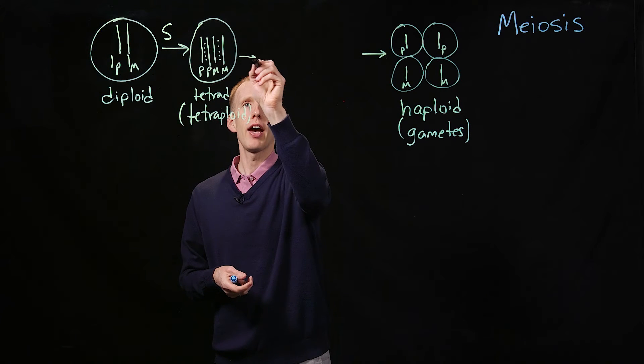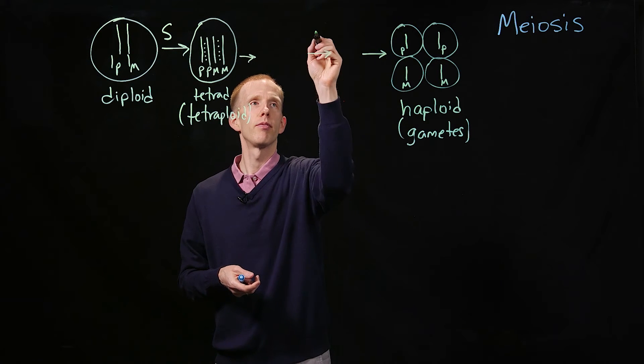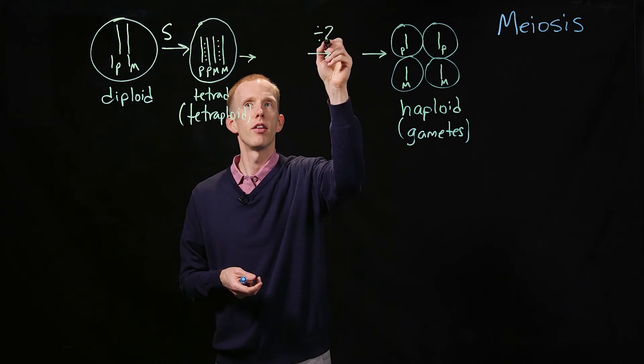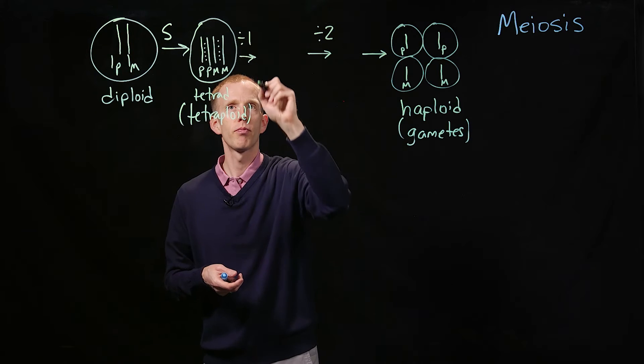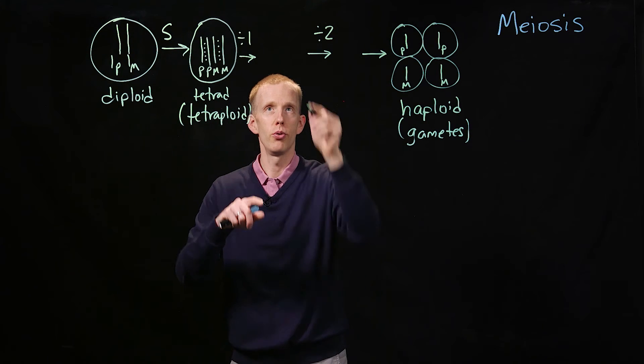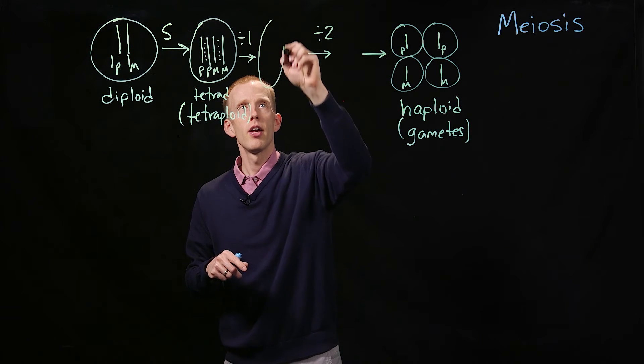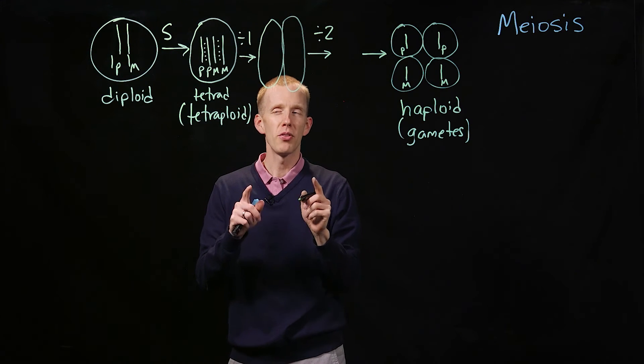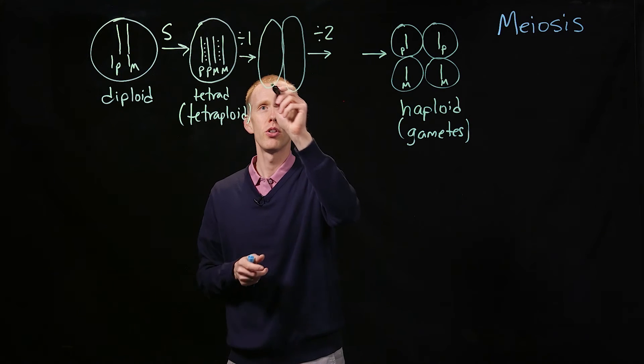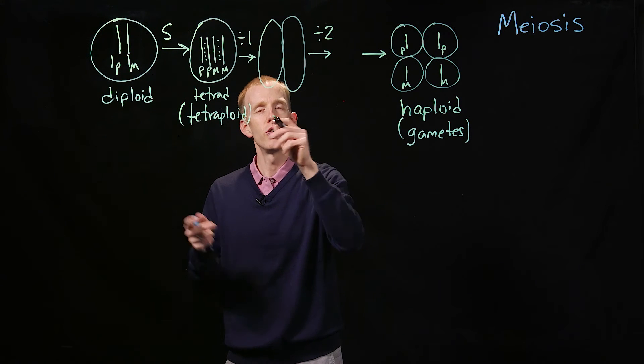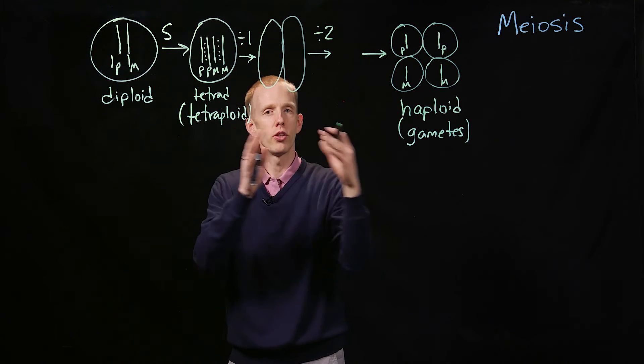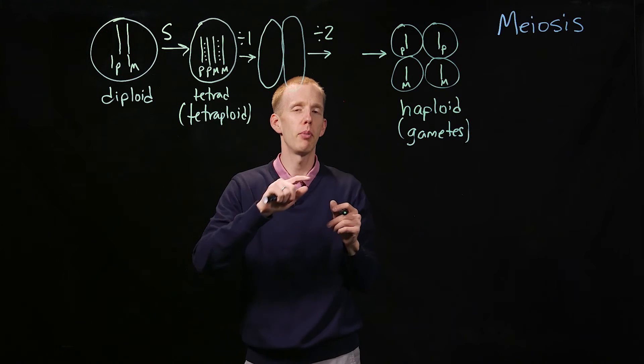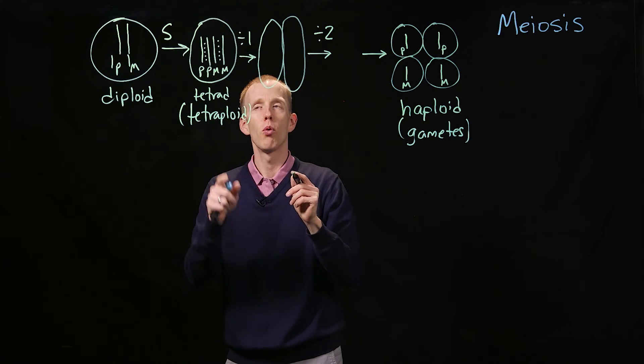So now we have to have two cell divisions. We're going to have the first division, where we go from one cell to two, and the only thing that you have to remember here is how these four chromosomes segregate into two cells. Do the two paternal versions go into one, and the two maternal go into the other cell, or is it one paternal and one paternal per cell?